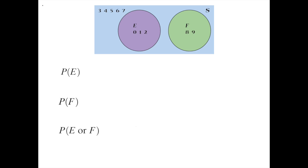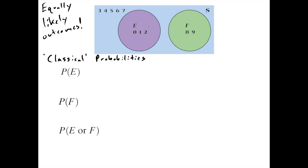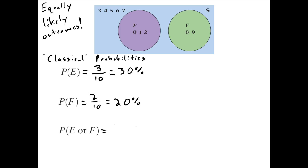Using that same example — chips randomly drawn from a bag, so all outcomes are equally likely — the probability of E is the number of ways E can occur (which is 3) divided by the number of possible outcomes (which is 10), giving us 30%. The probability of F is 2 out of 10, which is 20%. To find the probability that one or the other occurs, we add: 5 divided by 10 equals 50%. These all come from simple counting.